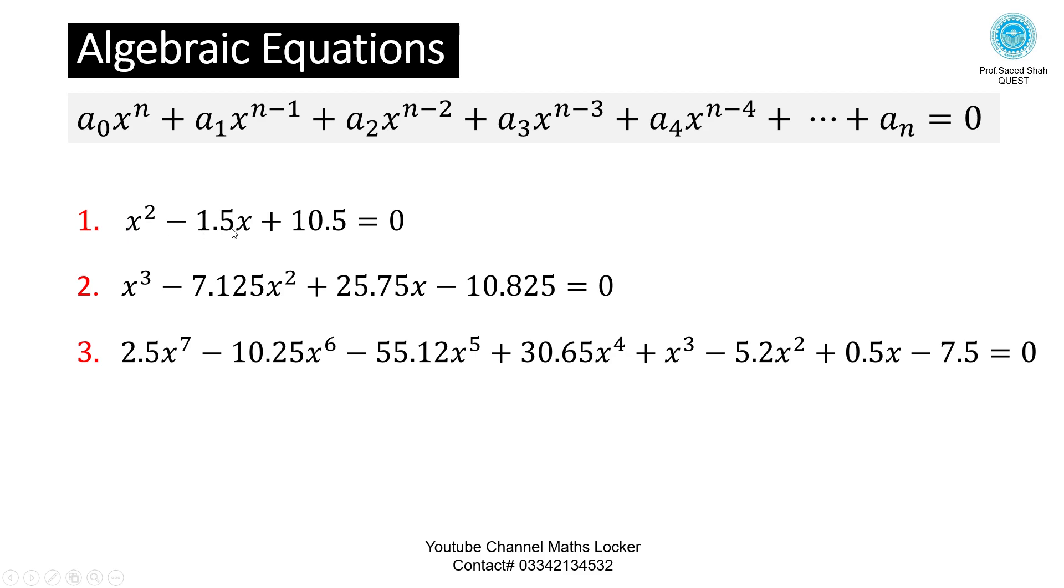Number 1: x² - 3x = 0. Number 2: x² - 1.5x + 10.5 = 0. Number 3: 5x = 0. These are called the algebraic equations when an equation is written in that form.